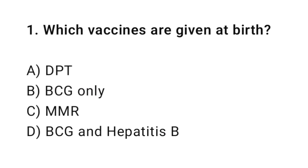Question number one: which vaccines are given at birth? The right answer is D — BCG and hepatitis B. At birth, newborns are given both BCG for tuberculosis prevention and the hepatitis B vaccine to prevent hepatitis B infection.